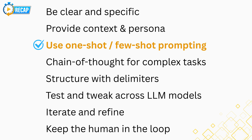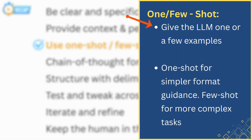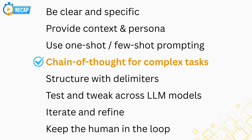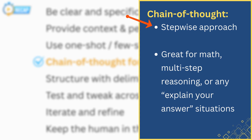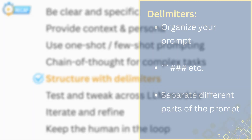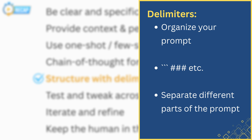Third, use one-shot or few-shot prompting when appropriate — show the AI one or a few examples of what you're looking for, like showing sample answers or doing practice problems together. This dramatically improves results when format or style is important. Use one-shot for simpler format guidance and few-shot for more complex or nuanced tasks where multiple examples paint a fuller picture. Fourth, use chain-of-thought prompting for complex tasks — prompt the AI to think step-by-step by instructing a stepwise approach or asking it to list its reasoning. This prevents mistakes and helps you follow the logic; it's great for math, multi-step reasoning, or any explain-your-answer situations. Fifth, structure with delimiters — use quotes, backticks, hashtags, etc. to clearly separate instructions, content, and desired format.